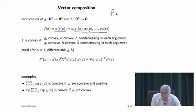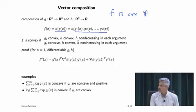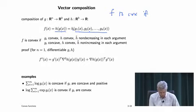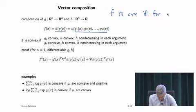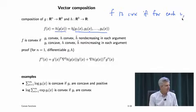f is convex if certain sufficient conditions hold — this is only sufficient, not necessary. For each i, there's a more general version, and we'll have an exercise on this.